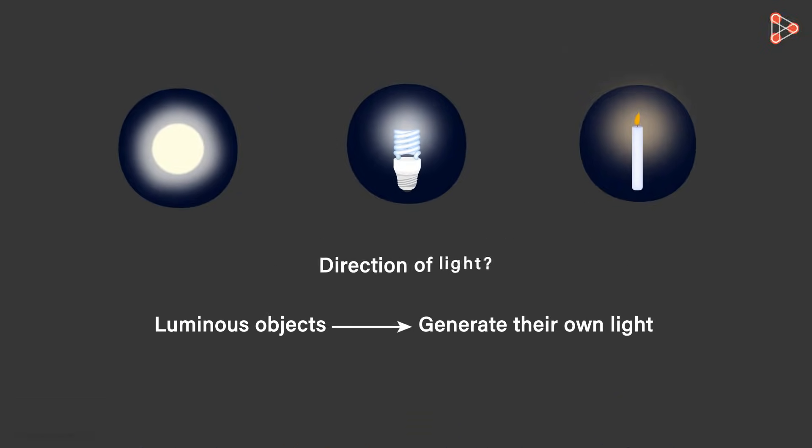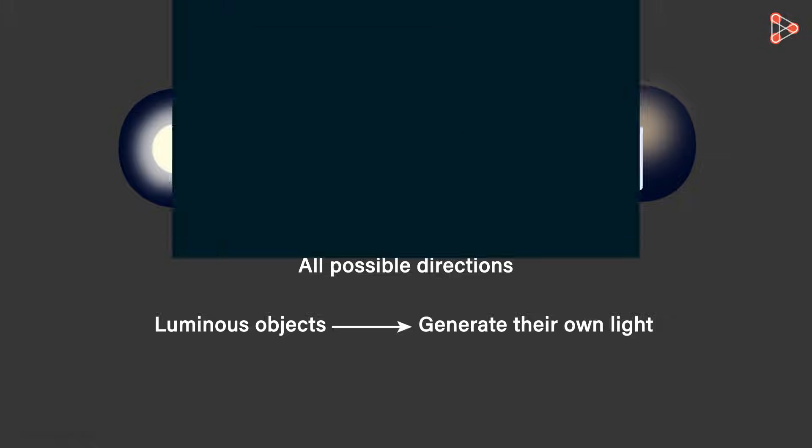In which direction do the luminous objects emit their light? They emit light in all the possible directions. Consider a fluorescent bulb which is glowing. It is emitting light in all the directions.